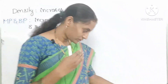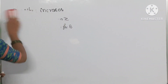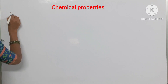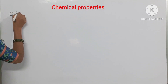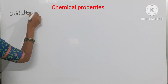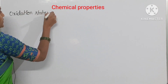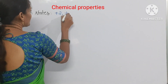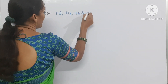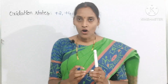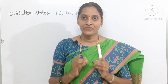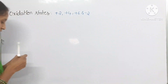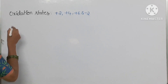Now moving to chemical properties. First, oxidation states: group 16 elements show +2, +4, +6, and −2 oxidation states. For oxygen, −2 is the stable oxidation state, but in OF₂ it shows +2. The oxidation states +2, +4, and +6 are shown by sulfur to polonium.